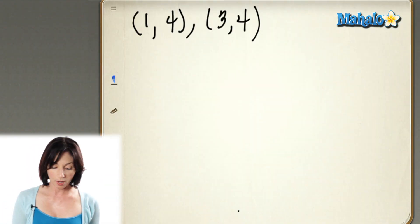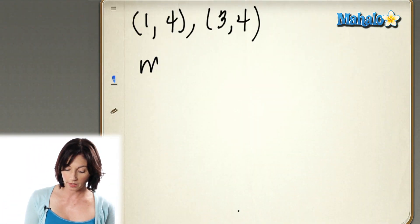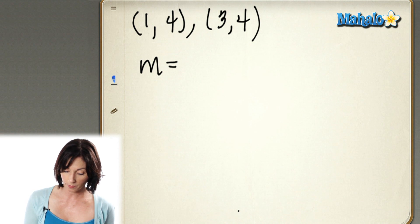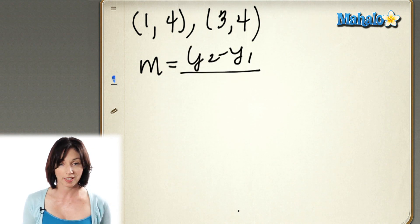Let's look at the points (1, 4) and (3, 4). Now, slope is the difference in the y-coordinates over the difference in the x-coordinates.